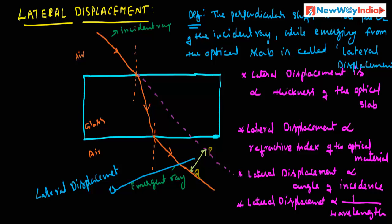The lateral displacement is directly proportional to the thickness of the glass slab. If we increase the thickness of the glass slab, lateral displacement also increases. If you decrease the thickness of the glass slab, the lateral displacement also decreases.